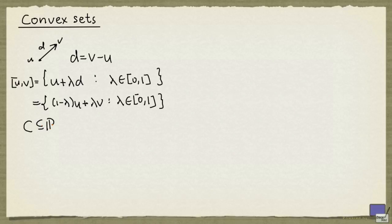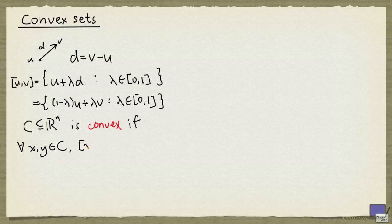Now, take a subset of Rn and call it C. We say that this is convex if for all x, y in C, the line segment between x and y is contained in C.